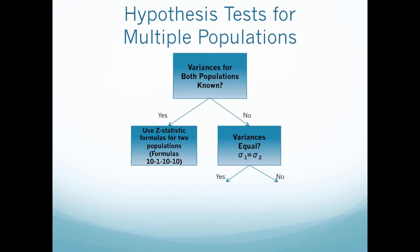So once again, we have another branch of our flowchart. So if the variances are equal, then we're going to extend over here. So we are going to use some t-statistic formulas for two populations. And the formulas then are these in your book. We then will finish this branch in our next video.